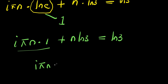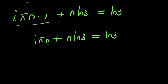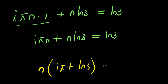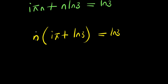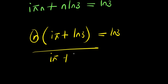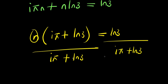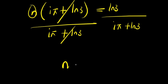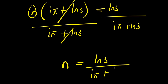So the next thing we are going to do is factor out n: we have n times i times pi plus ln of 3, equals ln of 3. The next step is to isolate n by dividing both sides by i times pi plus ln of 3. This cancels, and we are going to have n equals ln of 3 divided by i times pi plus ln of 3.